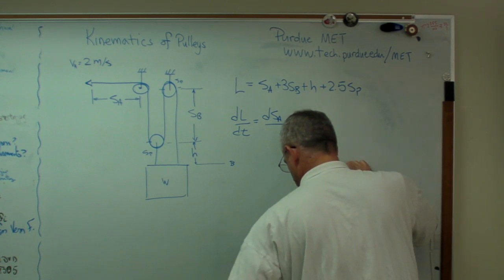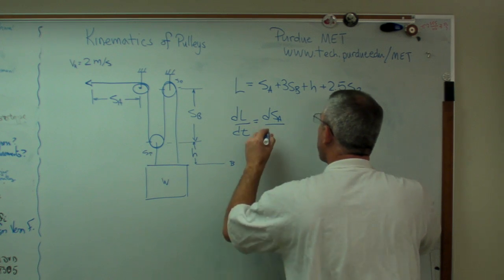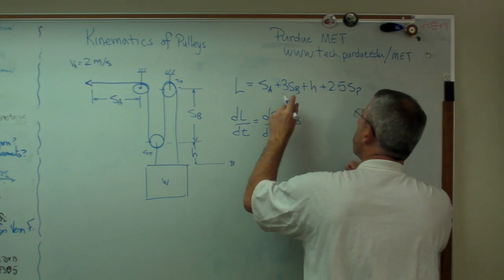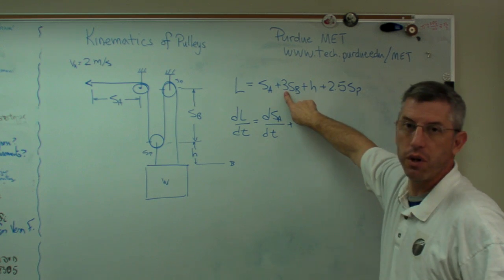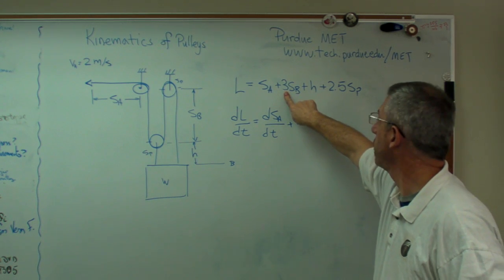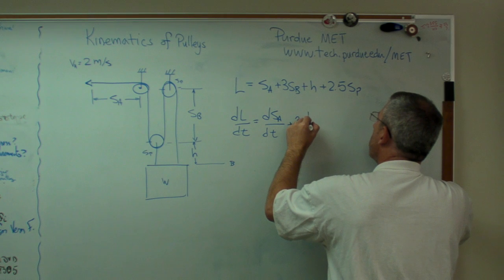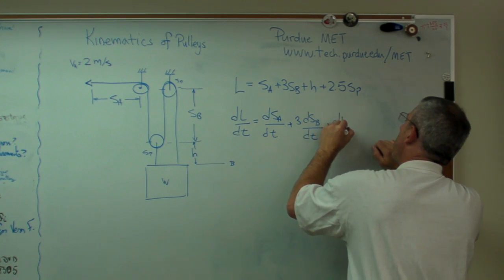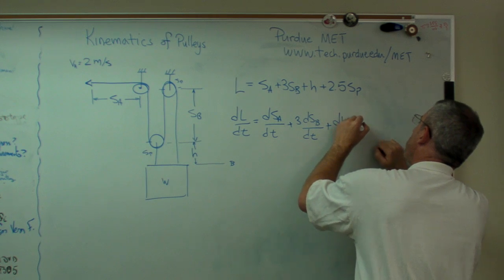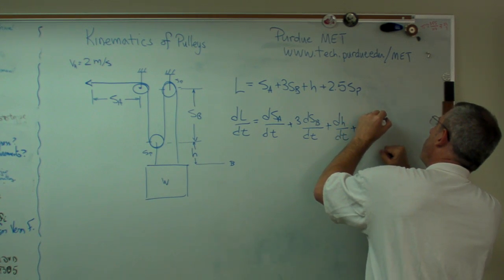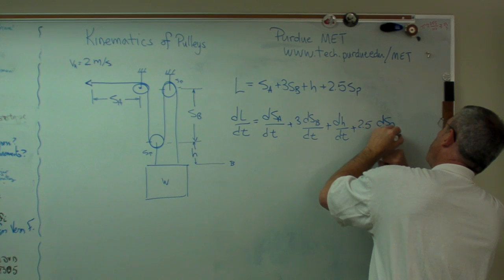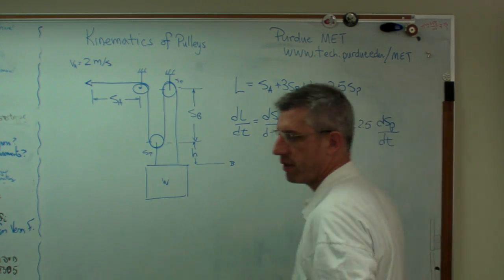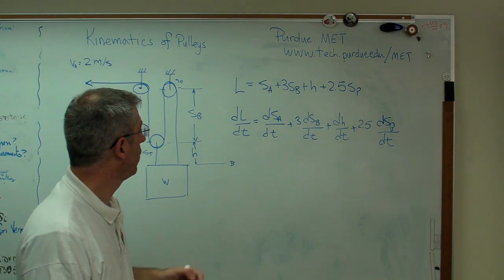And write DL/DT. This is going to be pretty straightforward here. Plus 3. Now, remember, when you're taking derivatives, the coefficient goes out front. Plus DH/DT, plus 2.5 DSP/DT.